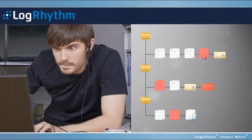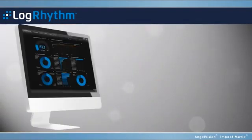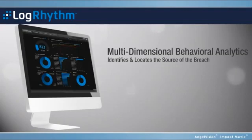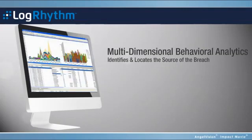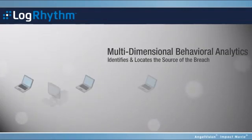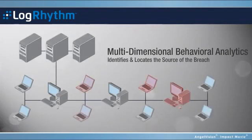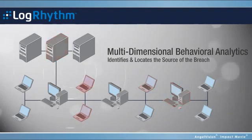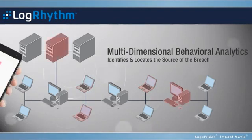Let's say an administrator with privileged access decides to compromise your business. Using multi-dimensional behavioral analytics, LogRhythm's AI engine is able to correlate data from multiple sources to recognize that the user authenticated from a suspicious location, accessed sensitive files in a classified network segment, and a non-white-listed process started on the file server.